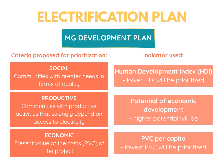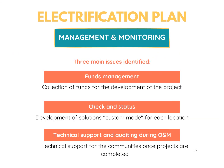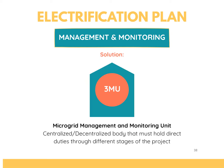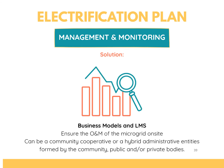Once done with the first batch, the next fronts will be worked on. The study also defined how to compute the present value costs. Three main issues were identified for the management and monitoring stage: funds management, check status, and technical support and auditing during O&M. Two solutions were proposed: one is the establishment of a microgrid management and monitoring unit, or 3MU, a body that must hold direct duties through the different stages of the project; and the development of business models and LMS, or local management structure, to ensure O&M of the microgrid on-site.